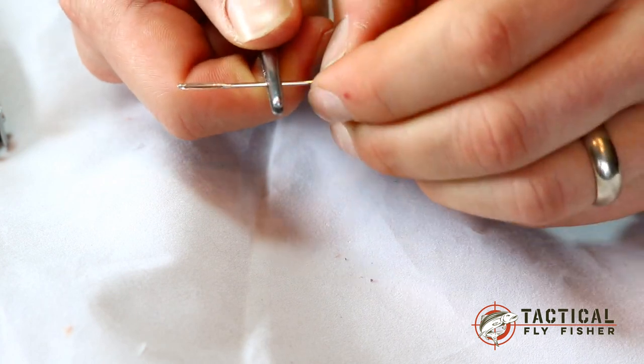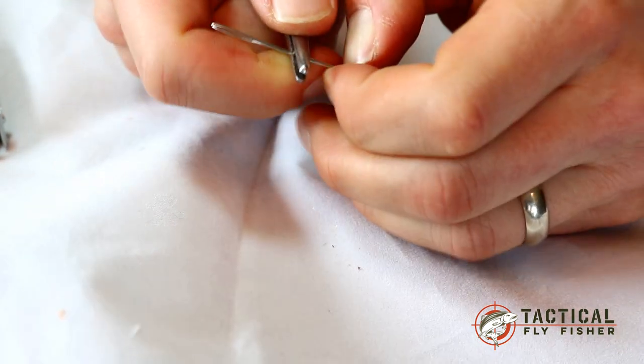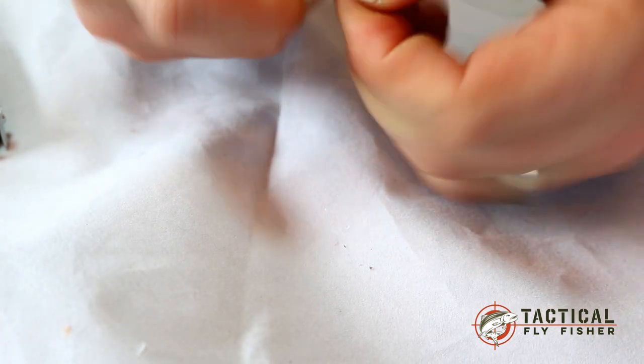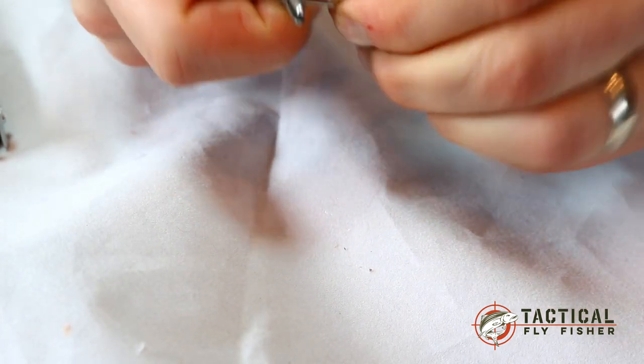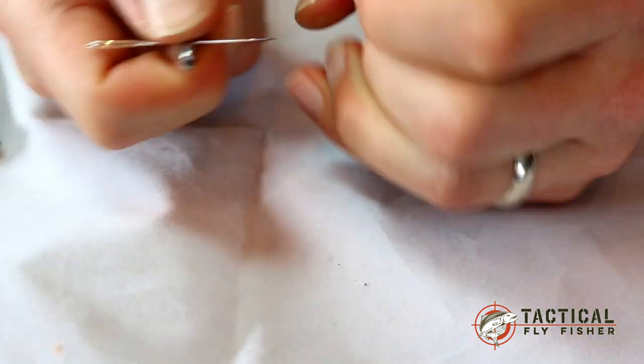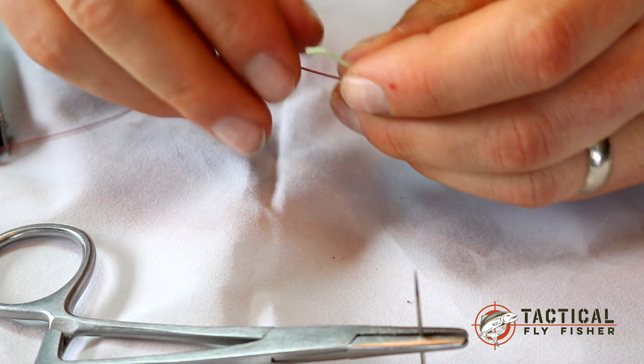Now you want to try and pull that off with your thumbnails if you can instead of pulling on the line. If you pull on the line then you risk constricting that widening that you've already done of the fly line and kind of negates that widening you've done with the needle.